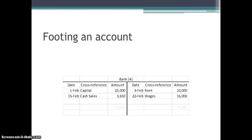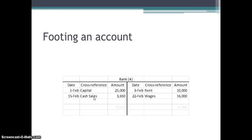Let me work through an example with you. Let's take the bank ledger account. For the month of February: on the 1st, we debited our bank $25,000 and the credit side of that entry went to capital. On the 3rd of February, we paid some rent — so the entry was debit rent expense and credit bank $10,000.